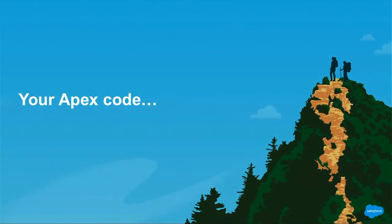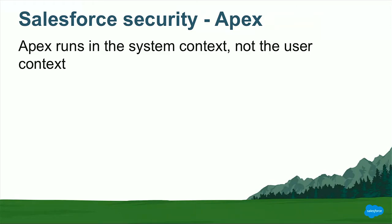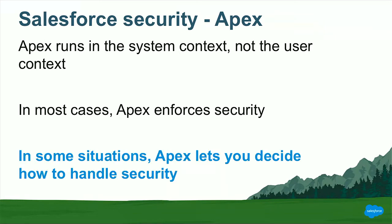Now let's talk about your Apex code, because Apex has a little bit of variation here. Probably the most important point — and if you don't remember anything else from this session — is that Apex code runs in the system context, not the user context. That's an important distinction. In most cases, in spite of the fact that your Apex code runs in the system context, Apex enforces security the way you'd expect it to, and your Apex code behaves just like declarative configuration. However, in some situations, Apex lets you decide how to handle security, and that's what we're going to spend the next 10 minutes covering.